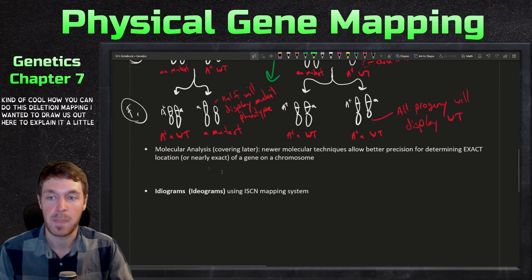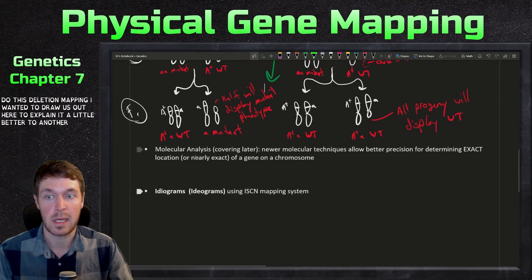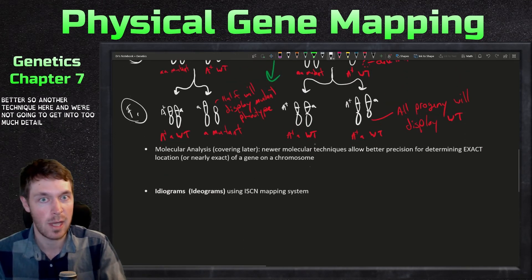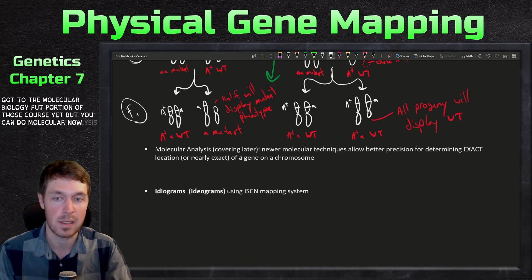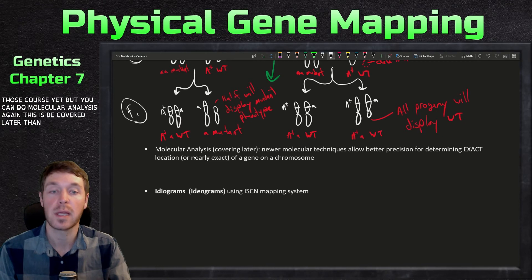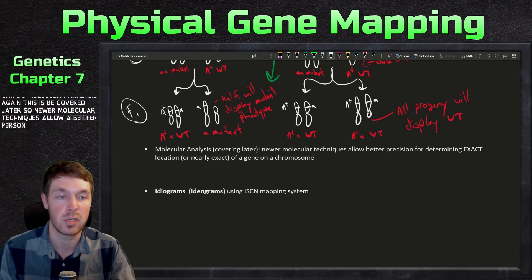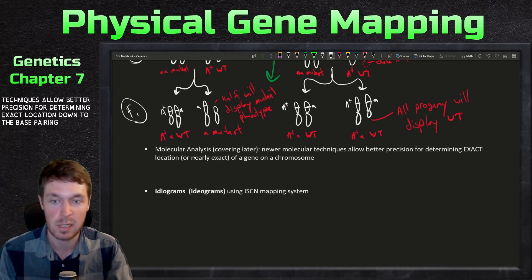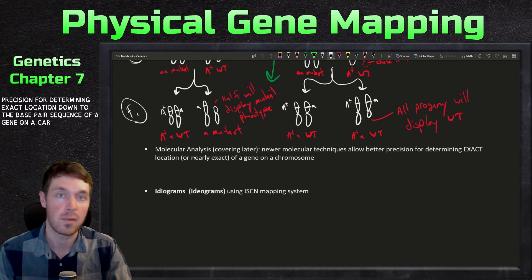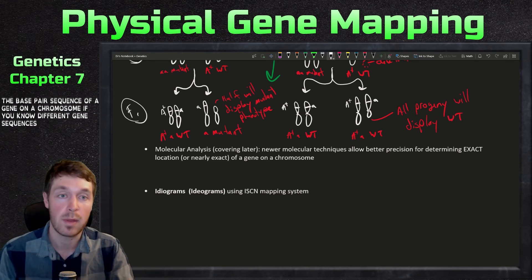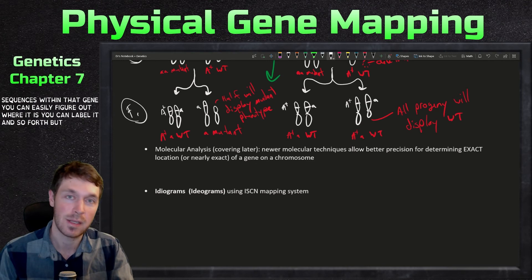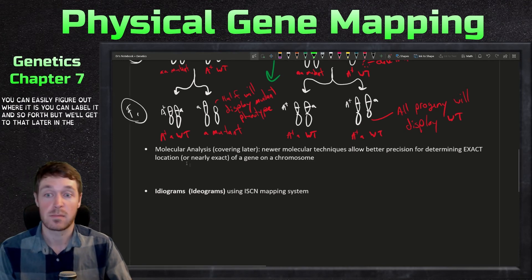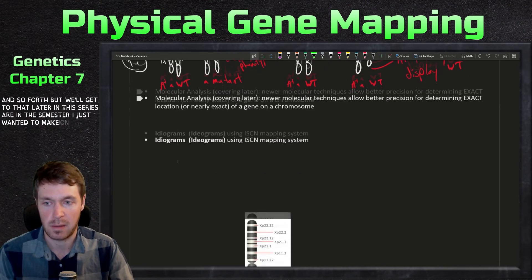Another technique is molecular analysis, though we won't go into too much detail since we haven't reached the molecular biology portion of the course yet. Newer molecular techniques allow much better precision for determining the exact location of a gene on a chromosome, down to the base pair sequence. If you know different gene sequences within a region you can label it and figure out exactly where it is — we'll cover that later in the semester.